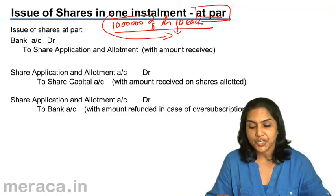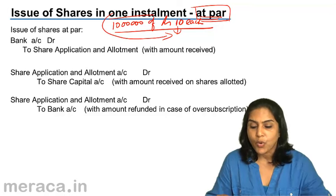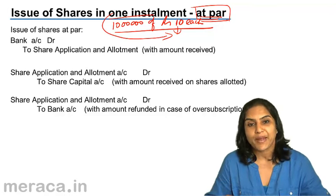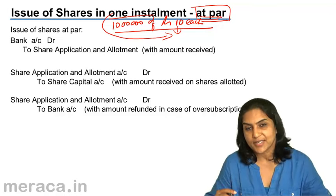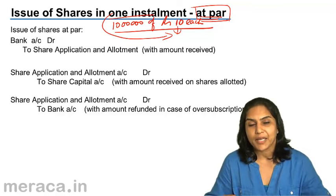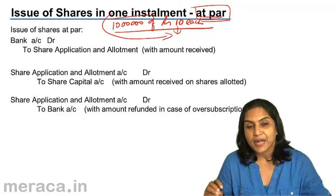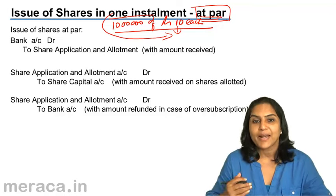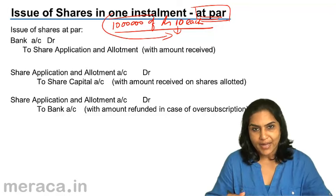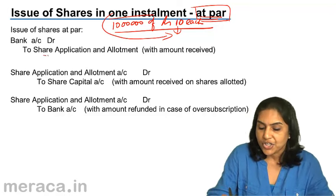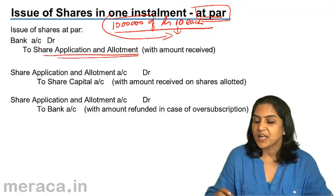What is the entry for issue of shares at par? What happens first is the money is received from the prospective investors. People who were interested in the company would have paid up the money, filled up the application, and paid money according to the number of shares that they have applied for. Money comes in and the entry is to debit bank account with the money coming in, credited to an account called share application and allotment account.